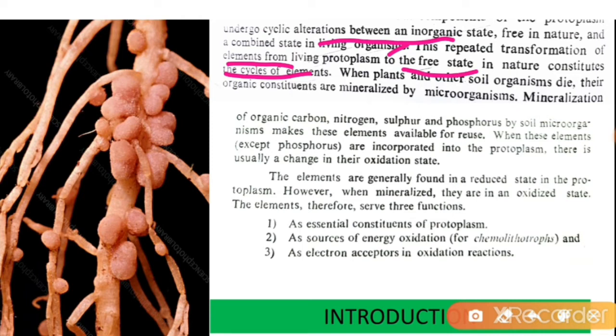When plants and other soil organisms die, their organic constituents are mineralized by microorganisms. Earth is essentially a closed system with respect to matter. All matter on earth cycles, and every matter used by living organisms passes between the biotic and abiotic components of the biosphere.